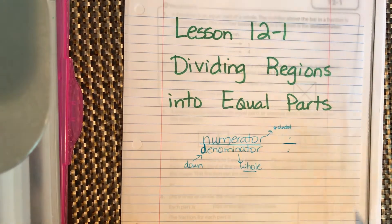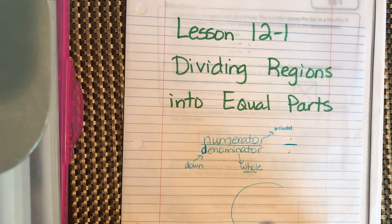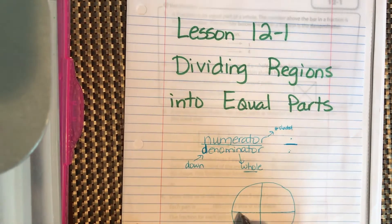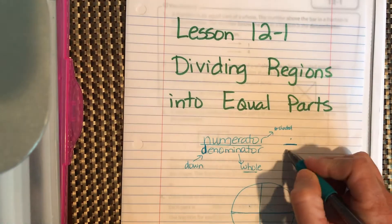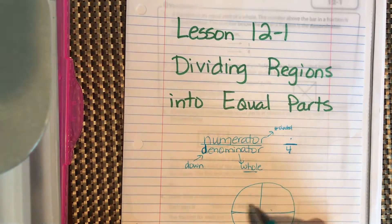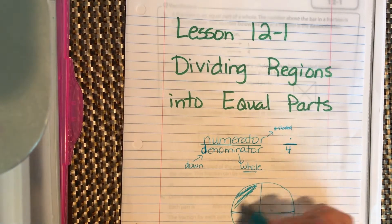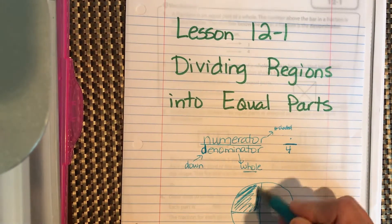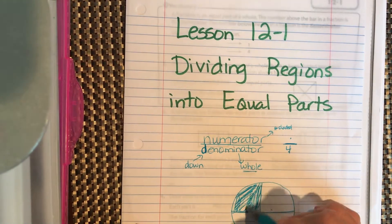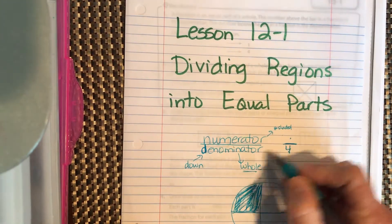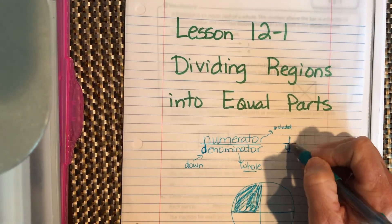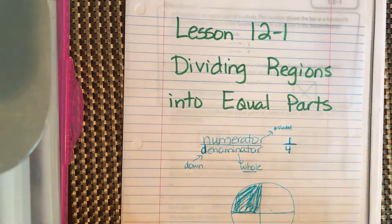If I have a pizza divided into four equal parts, my denominator is four because that's how many parts I have. Let's say one piece is shaded — that's the one piece I'm going to eat. There are four pieces total, so my denominator is four. My numerator is one, so I'm going to eat one fourth of the pizza.